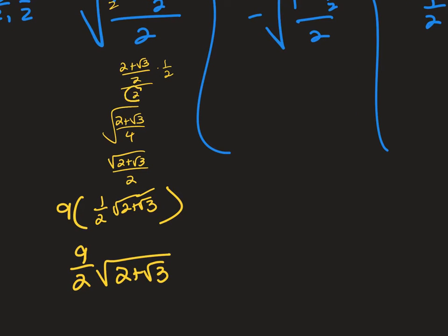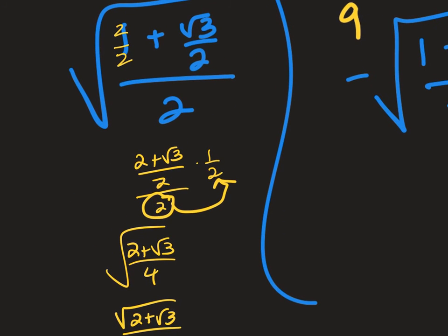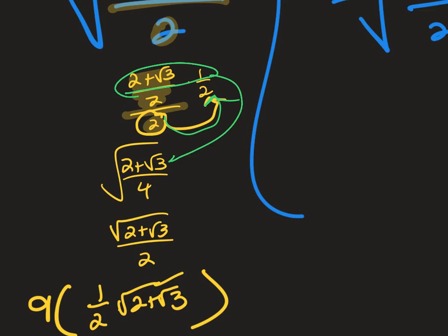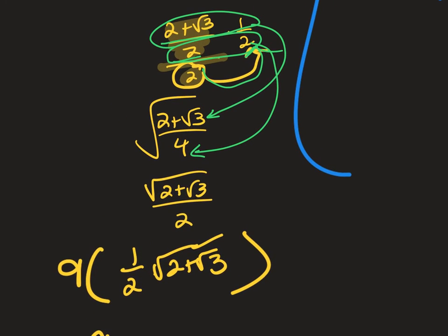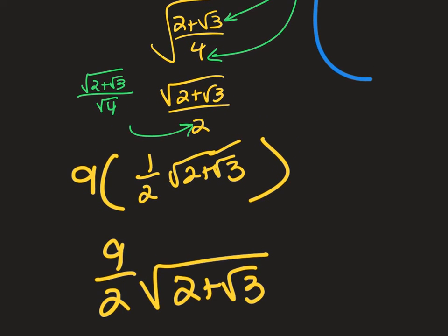So this would have been 2 over 2, 2 plus root 3 over 2 over 2 times 1 half. That becomes 2 plus root 3 over 4. And you get the square root of 2 plus root 3 over 2. Then I'm going to do the same. And so the 1 half they brought out front. And then the original question said 9 times that. So I just make this 9 times that, or 9 halves. Same thing with this one. I would multiply that end by 9.